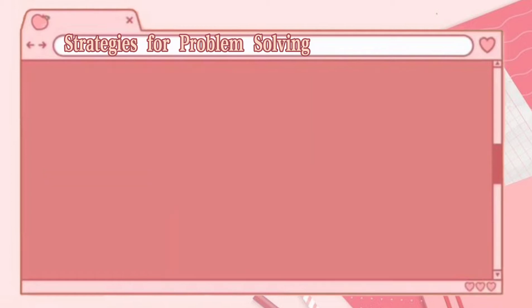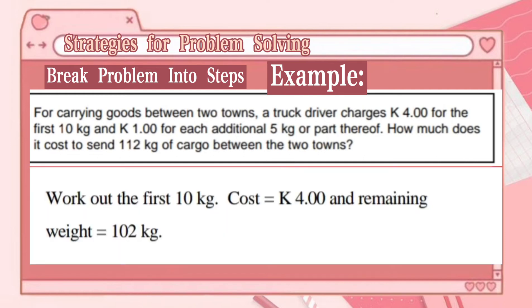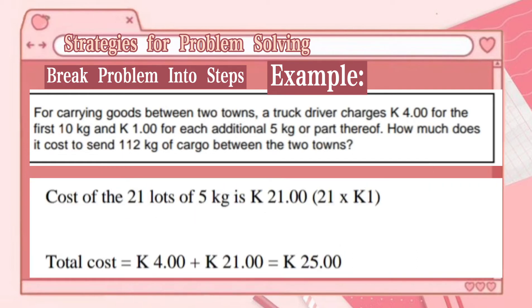The fifth strategy is to break the problem into steps. For example: for carrying goods between two towns, a truck driver charges 4 kina for the first 10 kg and 1 kina for each additional 5 kg or part thereof. How much does it cost to send 112 kg of cargo? Step 1: the first 10 kg costs 4 kina; remaining weight is 102 kg. Step 2: 102 ÷ 5 = 20 lots with 2 kg remaining, counted as 21 lots of 5 kg. Step 3: 21 lots × 1 kina = 21 kina. Total cost = 4 + 21 = 25 kina.